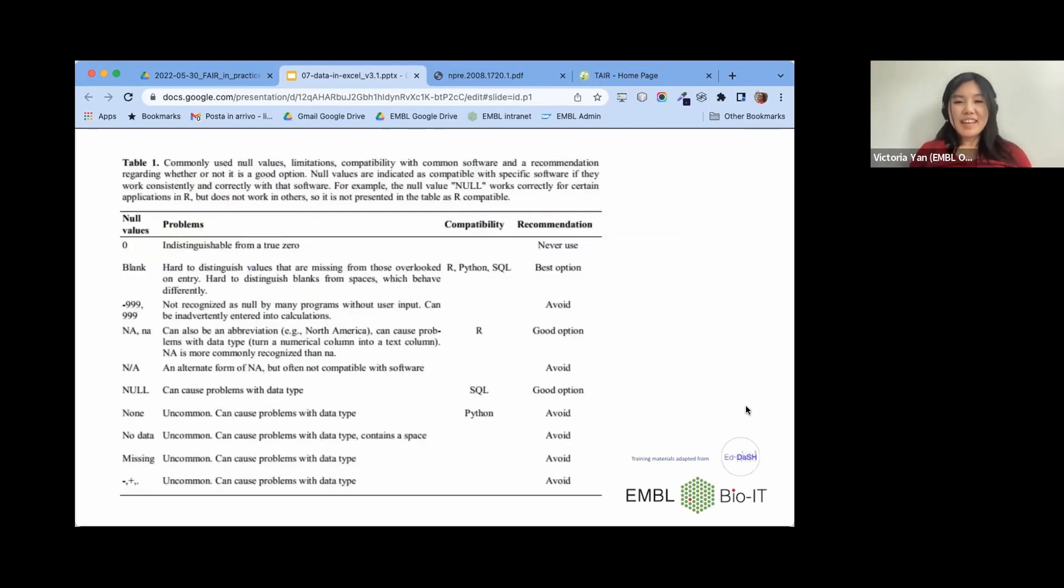One thing to add. I sometimes use not a number, like N-A-N, to place somewhere if I needed to be a blank, and that's actually not included here. I think for many programming languages it's acceptable. It is acceptable for some programming languages. The warning would be the same as N-A. They can be the abbreviation of something else. So depending on the type of data you're using, you should check that.